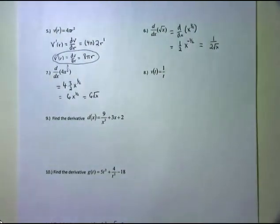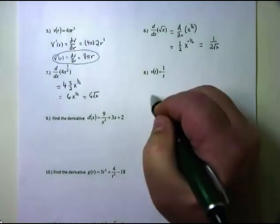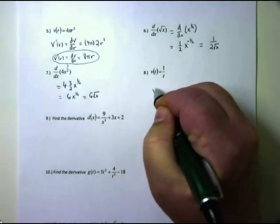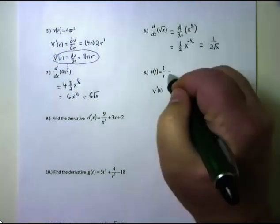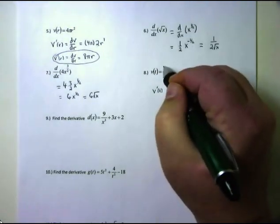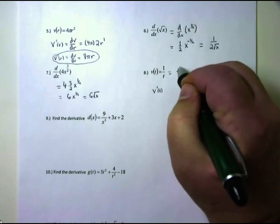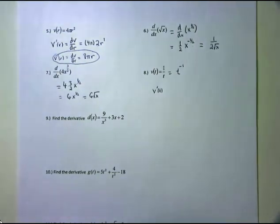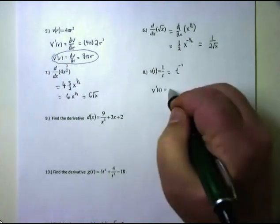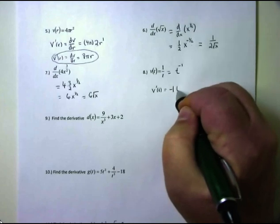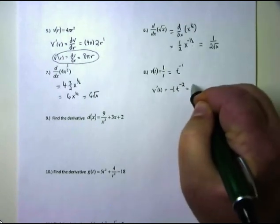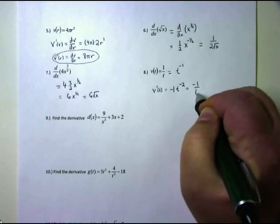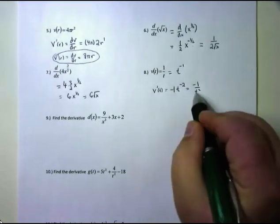For example, V(t) equals 1 over t. They ask for the derivative, so label it v′(t). Before taking the derivative, clean it up: 1 over t is the same as t to the negative 1 power. Now take the derivative: bring down your power negative 1, keep t, and subtract 1 — that's negative 2. This equals negative 1 over t squared if you clean it up. We'll take it either way.